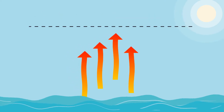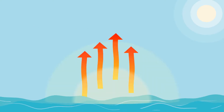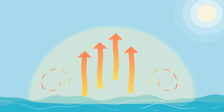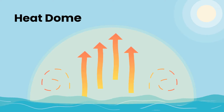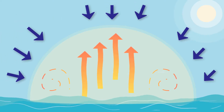In other words, they form a shield-like structure making the hot air circulate inside. This shield is called the heat dome. The dome is created by the surrounding atmospheric pressure.